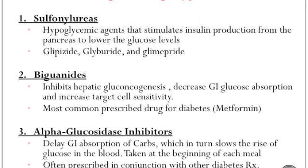The second class is biguanides. The mechanism of action of this class of drugs is to inhibit hepatic gluconeogenesis, thereby decreasing glucose absorption and increasing target cell sensitivity. The most commonly prescribed drug for this class is metformin.